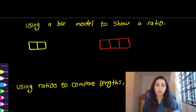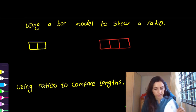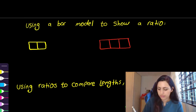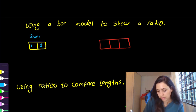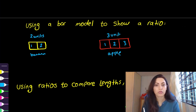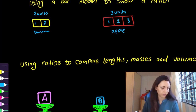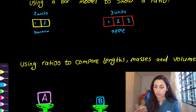We can also show the ratio in a different format using a bar model. For example, we have two units for banana — because we have two bananas — and three units for apples — because we have three apples. That's how you show the ratio using the bar model.